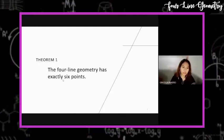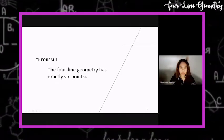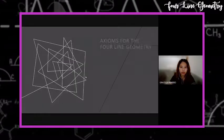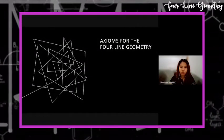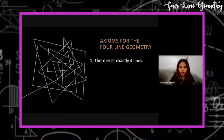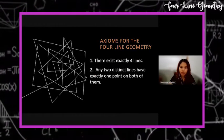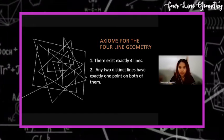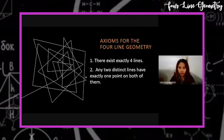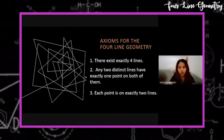To prove this theorem, we will be supported with the axioms of the four-line geometry. First, there exists exactly four lines. Second, any two distinct lines have exactly one point on both of them. And third, each point is on exactly two lines.